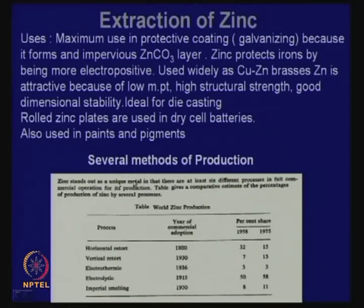Also, zinc could not be precipitated by cementation like copper can. If you have a copper sulphate solution and put in iron filings, copper will precipitate because copper is very low in the EMF series — but it is difficult to take zinc out of zinc solution that way. So mostly, zinc was being produced by pyrometallurgical processes until electricity became available as an industrial commodity. But today, zinc stands out as a unique metal in that there are at least six different processes in full commercial operation in its production — all competing with each other, each having its utility.